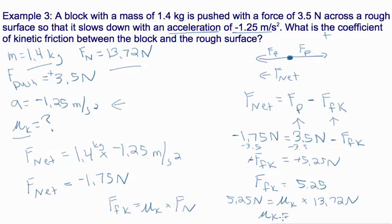And so our coefficient is 5.25 divided by 13.72. Now we have to talk about significant figures if we go back and look. This one has 2, 2, and 3 and we use 9.8 here. So we're going to have 2 significant figures. It'll be 0.38.